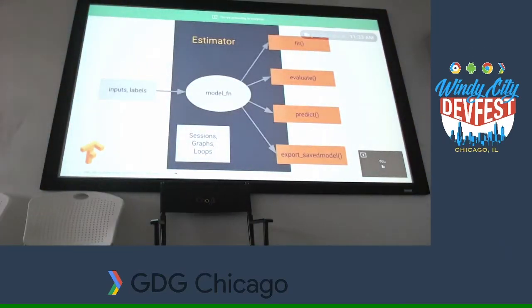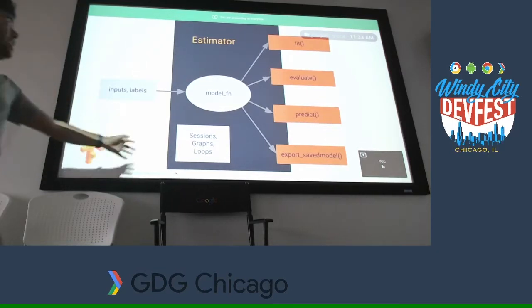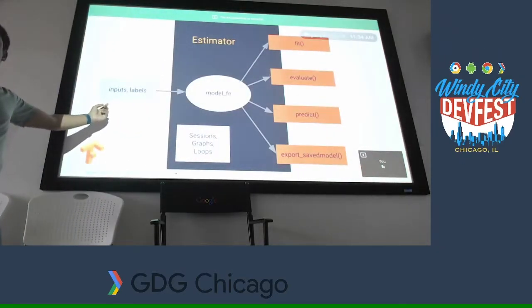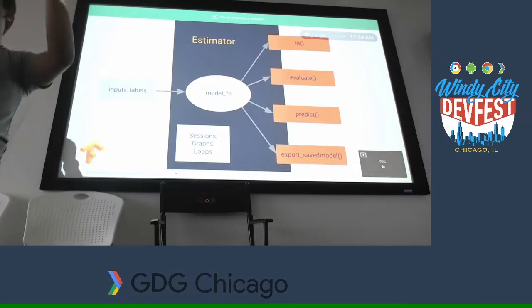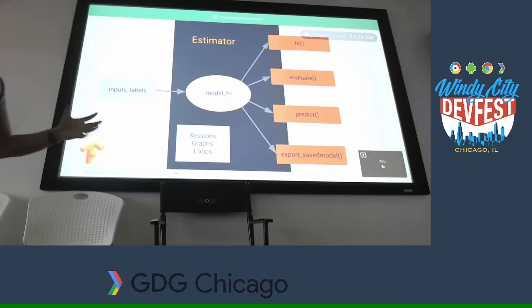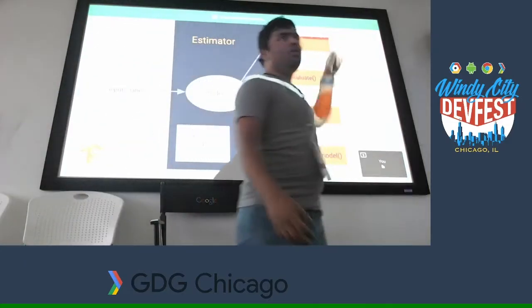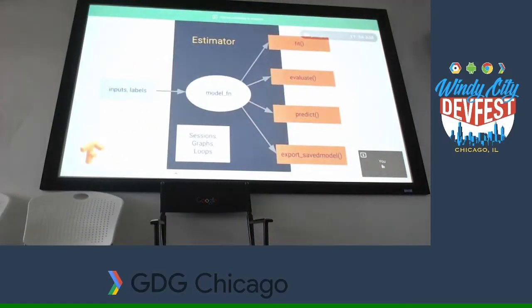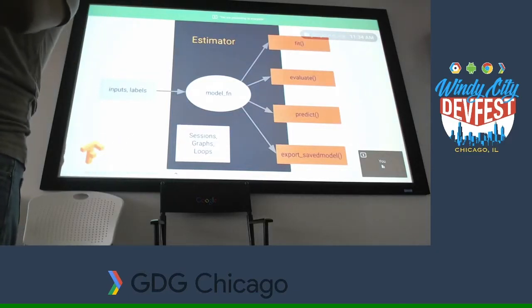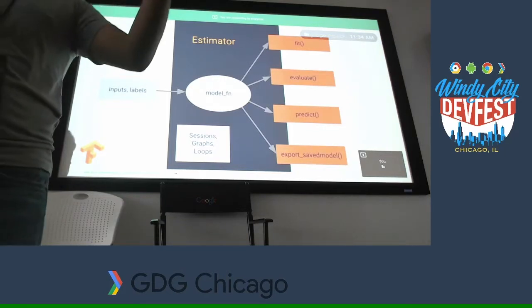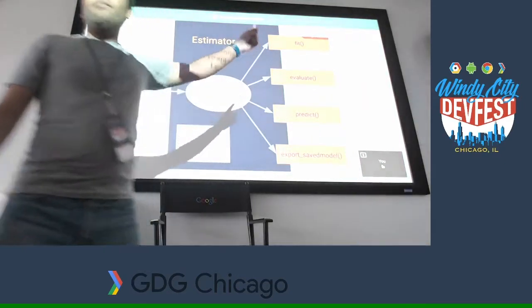Estimators: you have inputs and labels — images of cats with the label 'cat', images of dogs with the label 'dog'. You pass all that data to your model function. With millions of images, you divide them 90/10. The 90% you use to fit — fitting is basically training. You are trying to fit these images into a model. Then you have evaluate: the way we learned in our education — you learn something, then take a quiz. The evaluate function is the quiz your program takes: how well is it doing?